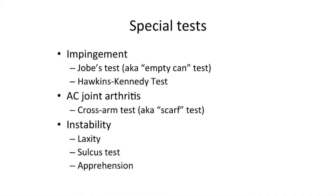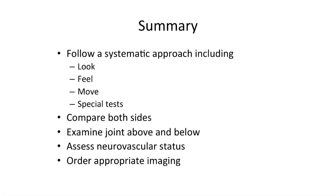As with any orthopaedic examination, to complete, you should examine the joints above and below, which in this case is the cervical spine and the elbow, and assess the neurovascular status of the affected limb. Thank the patient and consider ordering appropriate imaging. In summary, examination of the shoulder is best done using the look, feel and move approach, with special tests for suspected pathologies such as impingement syndrome and rotator cuff tears.